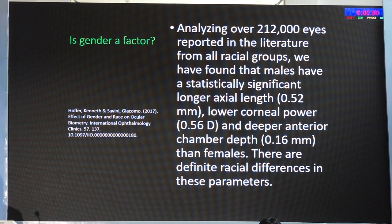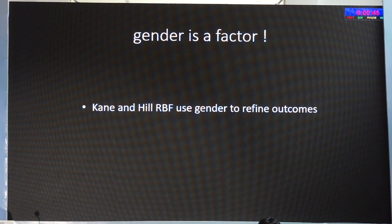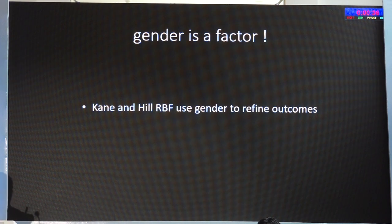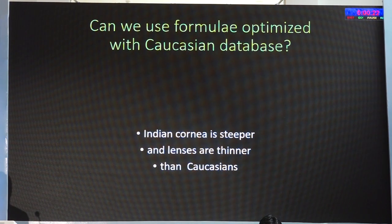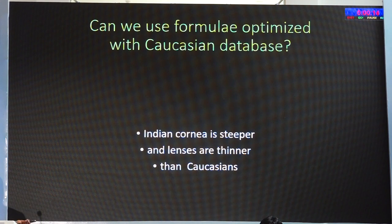Is gender a factor? After seeing more than two lakh eyes, Sabini et al concluded that males have longer eyes and flatter corneas. Gender is a factor and current generation formulae like Kane and Hill RBF will ask whether you are calculating for a female or male patient and give two different results. Similarly, Indian corneas are steeper and Indian lenses are thinner than Caucasians, so we should not blindly use formulae optimized for Caucasian or Chinese databases.